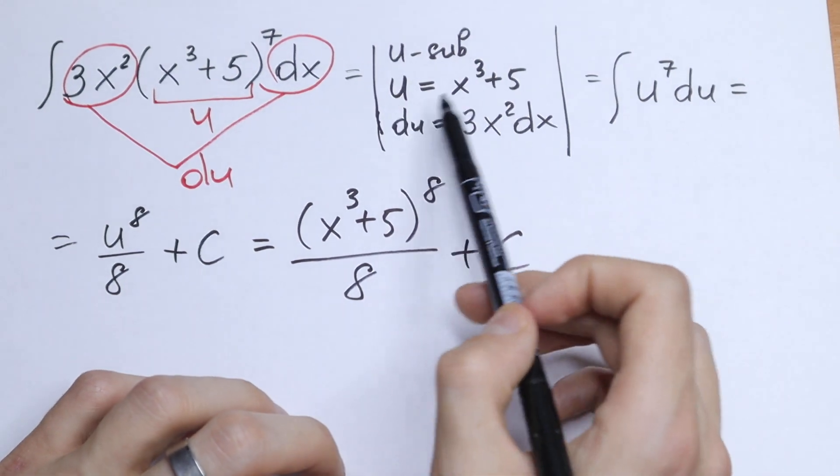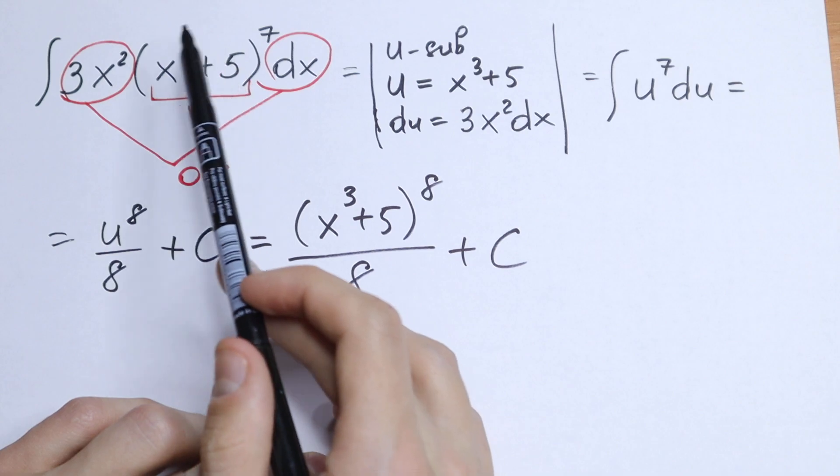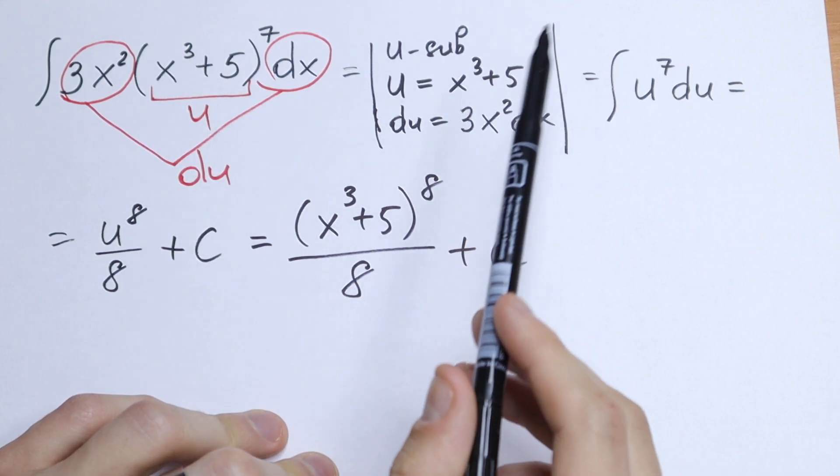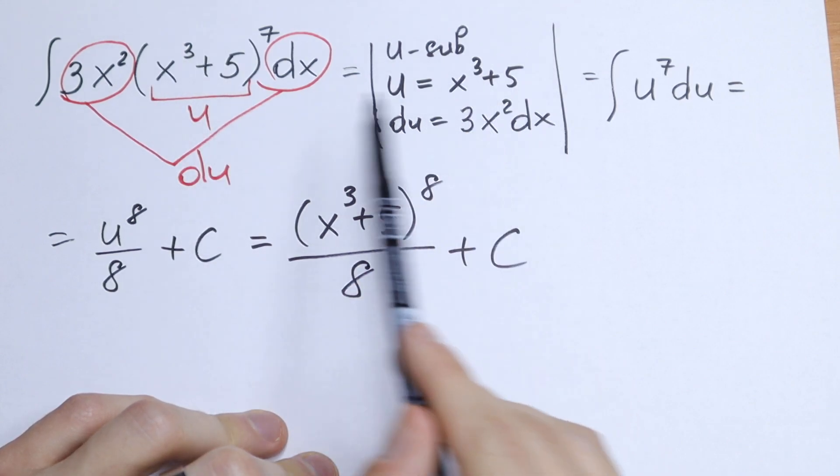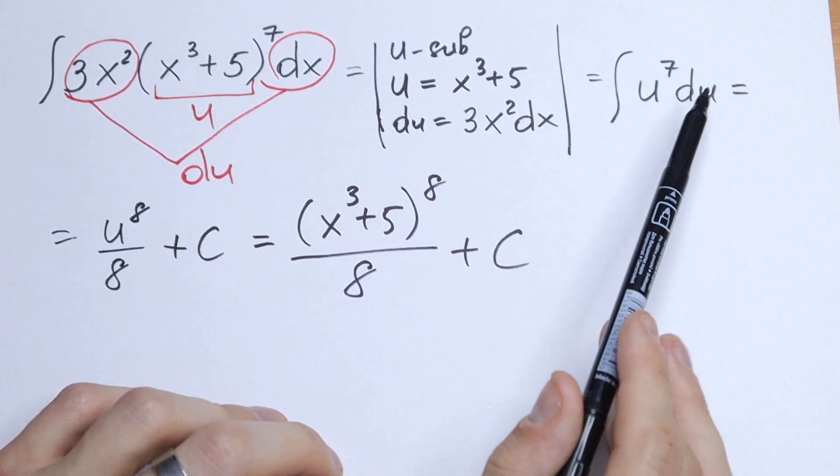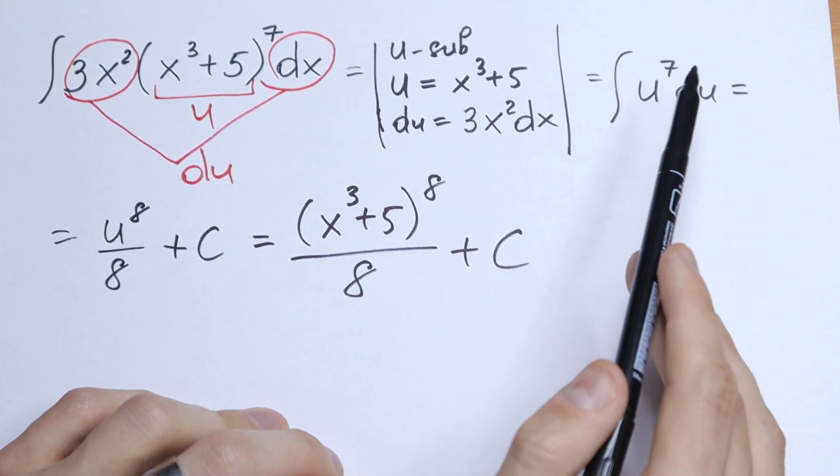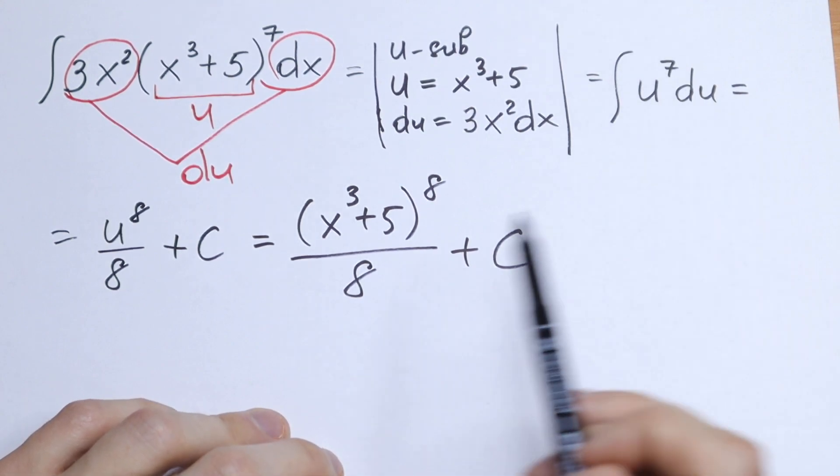Really good method to solve this by using u substitution. We write that our u equals x cubed plus 5. And it's really good that our du is equal to the same thing as right here. So we need to write only our du. And a classic table case. u to the 7th power if we are talking about integral, u to the 8th power over 8. Using our substitution and we will have our answer.